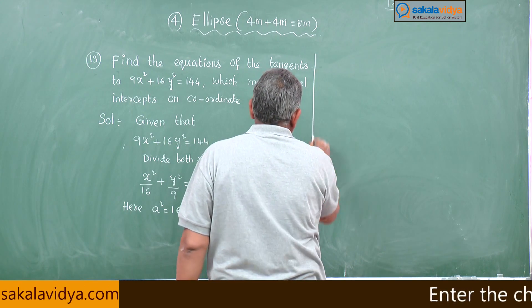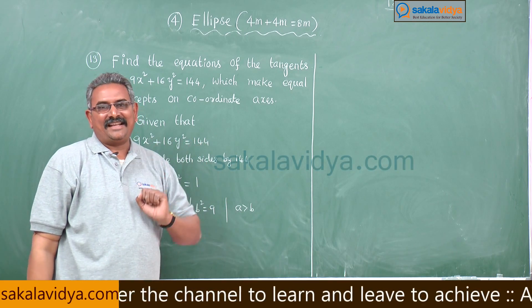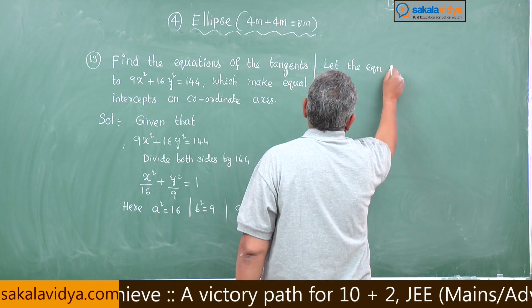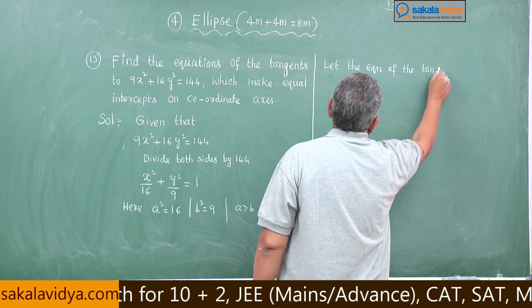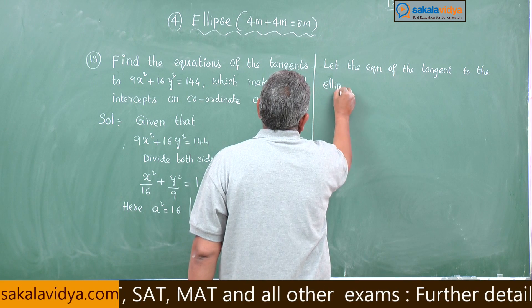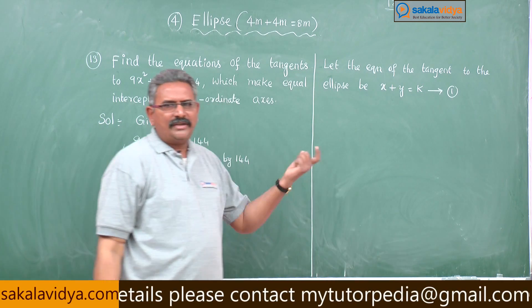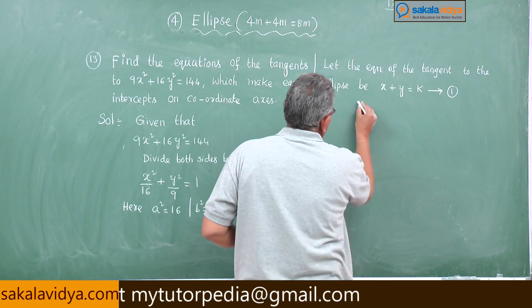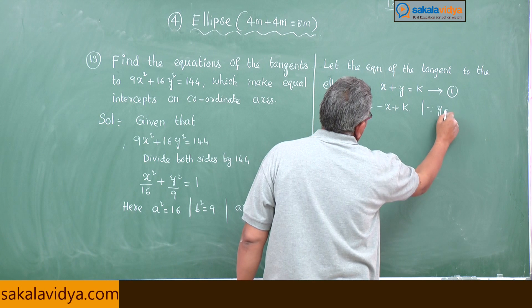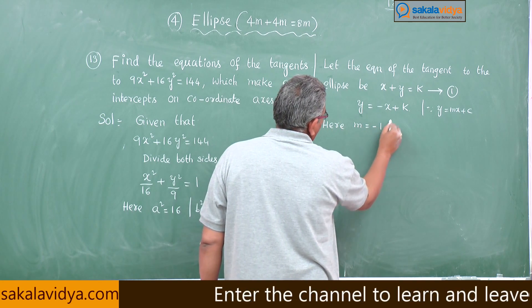Now our aim is to find equations of the tangents which make equal intercepts on the coordinate axis. Let the equation of the tangent to the ellipse be x + y = k. This can be written as y = -x + k. Comparing with y = mx + c, here m = -1 and c = k.